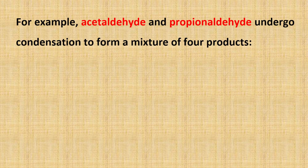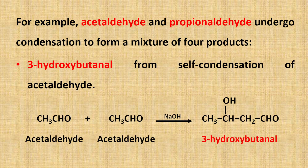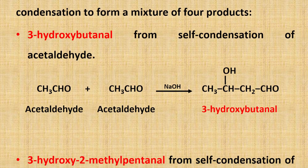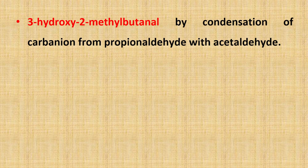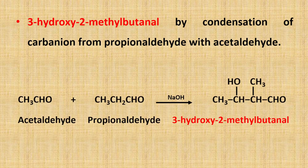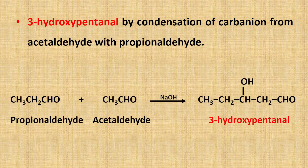For example, acetaldehyde and propanal undergo condensation to form a mixture of four products. The first possibility is the formation of 3-hydroxybutanal from self-condensation of acetaldehyde. The second possibility is the formation of 3-hydroxy-2-methylpentanal from self-condensation of propanal. The third is the formation of 3-hydroxy-2-methylbutanal by condensation of the carbanion from propanal with acetaldehyde. And the last is the formation of 3-hydroxypentanal by condensation of the carbanion from acetaldehyde with propanal. The mixed aldol condensation between two different aldehydes is not of much value since a mixture of four products is obtained.